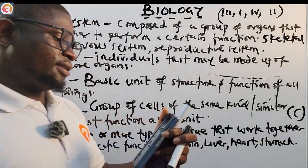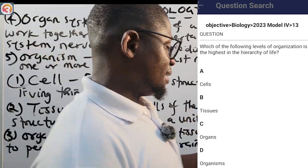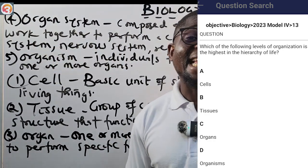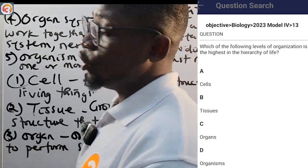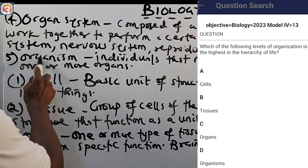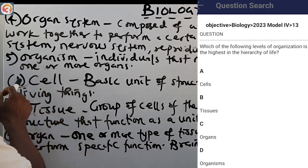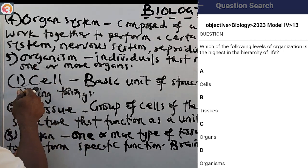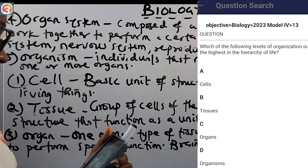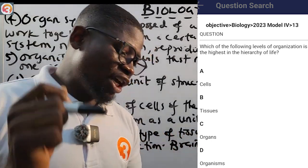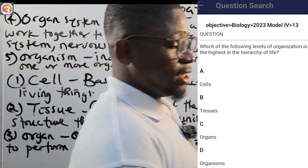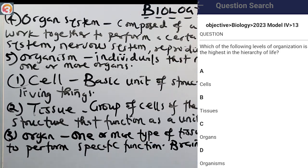2023 number 13: which of the following levels of organization is the highest in the hierarchy of life? The options are: A — cells, B — tissues, C — organ, D — organism. The correct answer is D, organism, which is the highest level. The lowest is the cell.